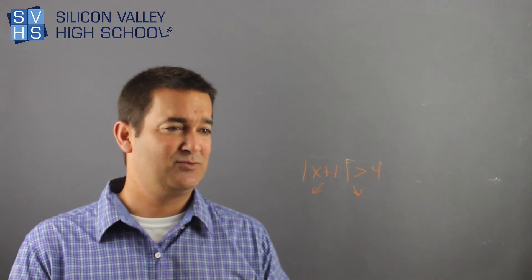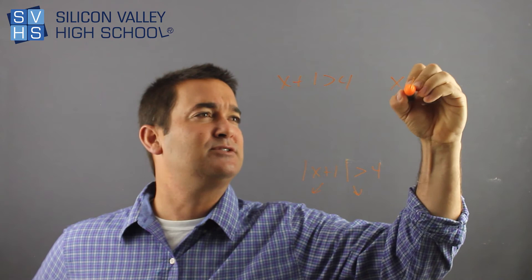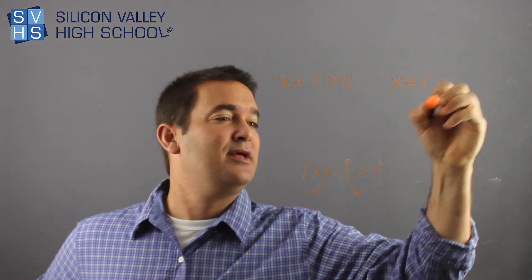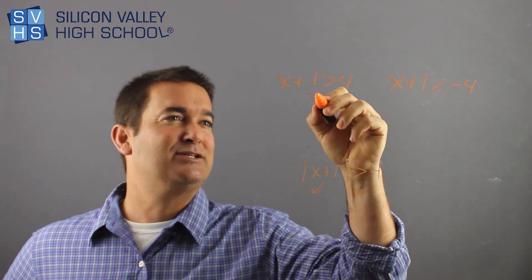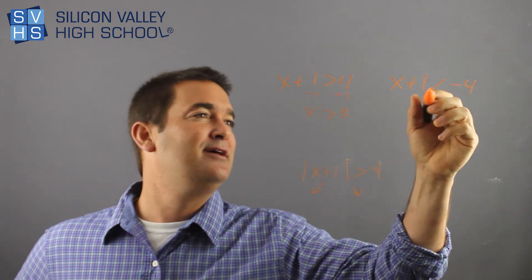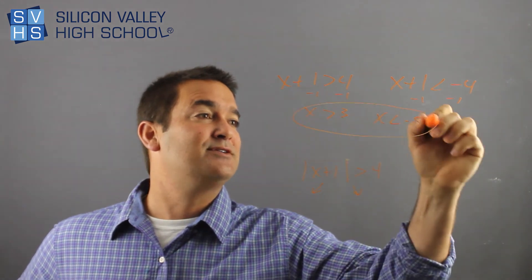So let's do my two arrows. This is weird, but above, right? This one would be x plus 1 greater than 4. x plus 1. Change the sign. Change the sign. Boom. And now, okay, I'm going to do minus 1, minus 1. x is greater than 3. Minus 1, minus 1. x is less than negative 5. Those are my answers.